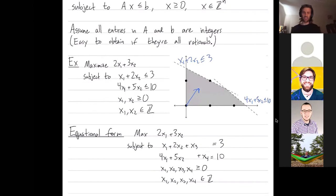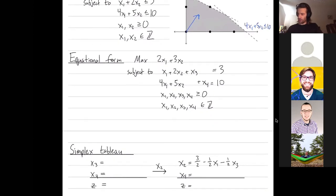And we know how to do that using the simplex method. We first put things into equational form using slack variables. So x3 is our slack variable for the first equation, and x4 is our slack variable for the second equation. And so the inequalities have become equalities. And now I have four variables, and they're still all integers.